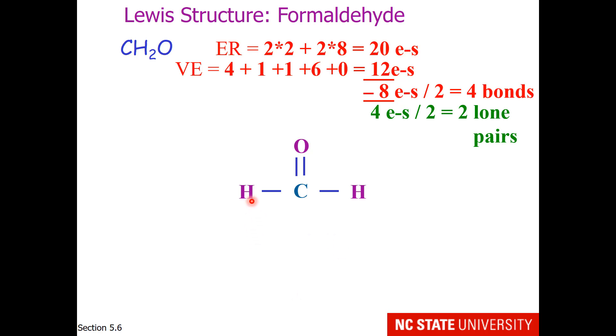Now, as far as lone pairs, we don't need any for the hydrogens. Carbon has 1, 2, 3, 4 bonds, so it has access to 8 electrons. Well, it must be the oxygen. The oxygen has 2 bonds, so so far it has 4 electrons, and it needs 4 more to have access to an octet.